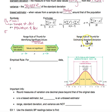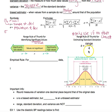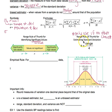We also have the range rule of thumb for estimating standard deviation. We only use this if there is no other choice — if you have the actual data, you will never use this unless the directions tell you to. The only time we'd use it is if maybe they only gave us the minimum and maximum values and not the entire data set.